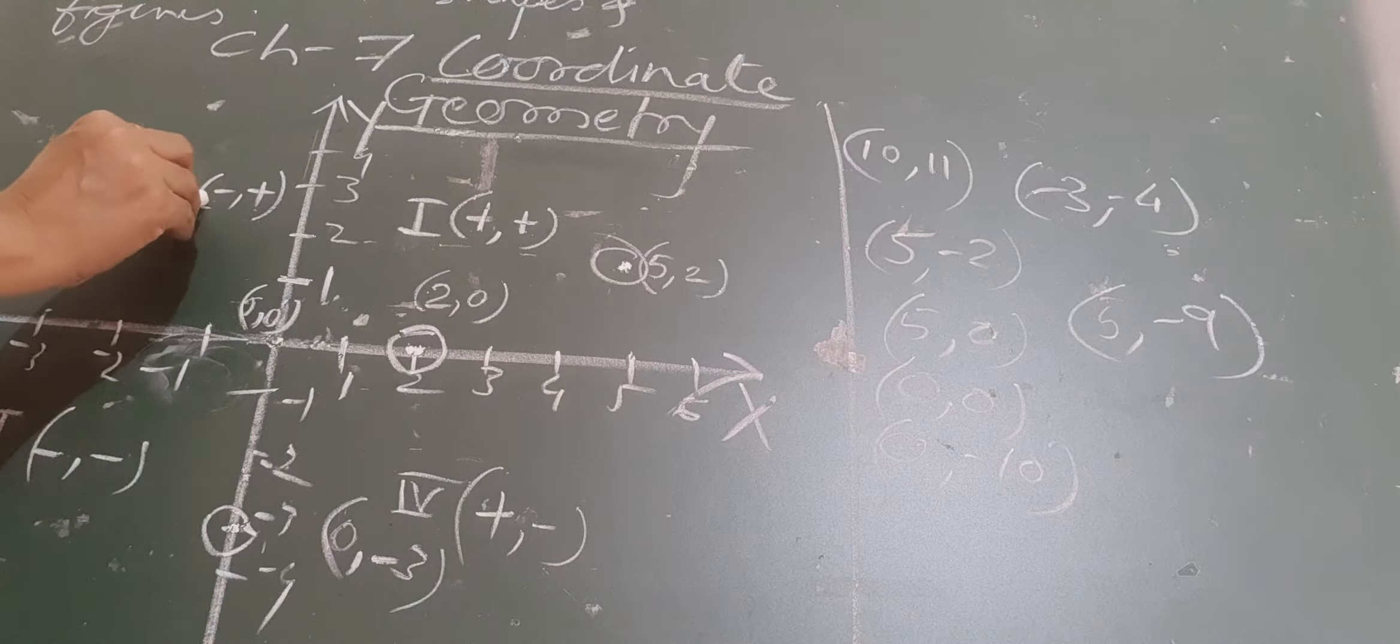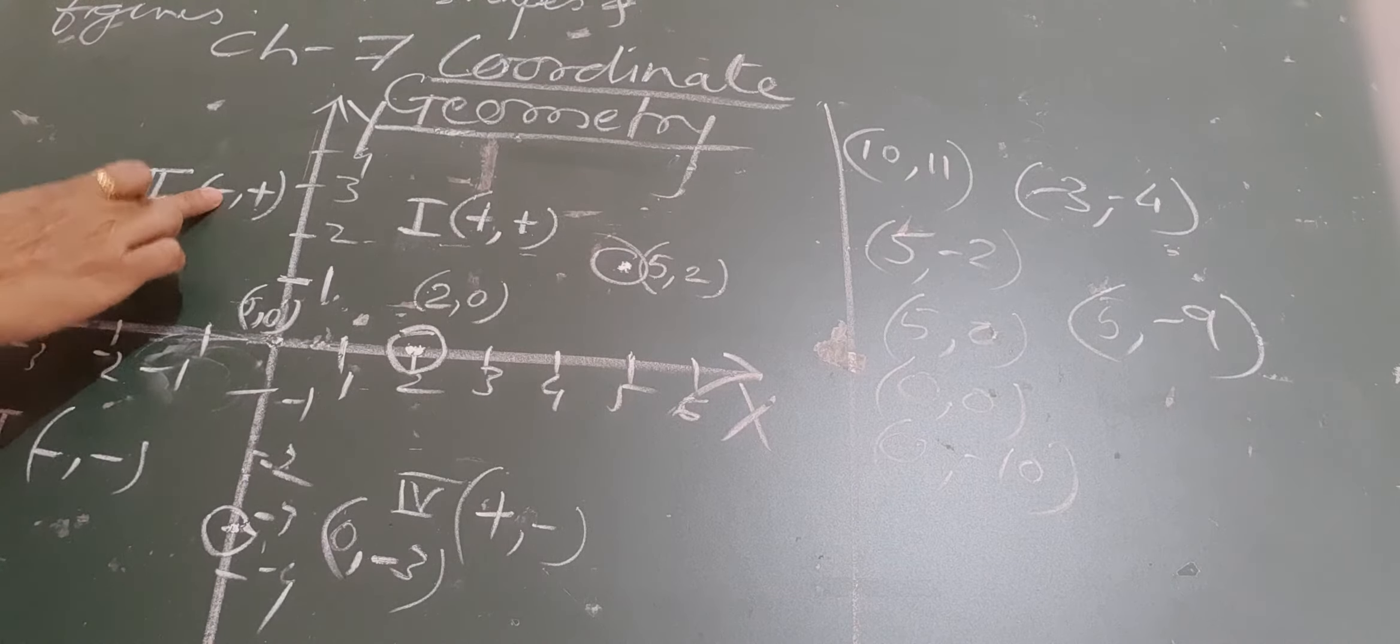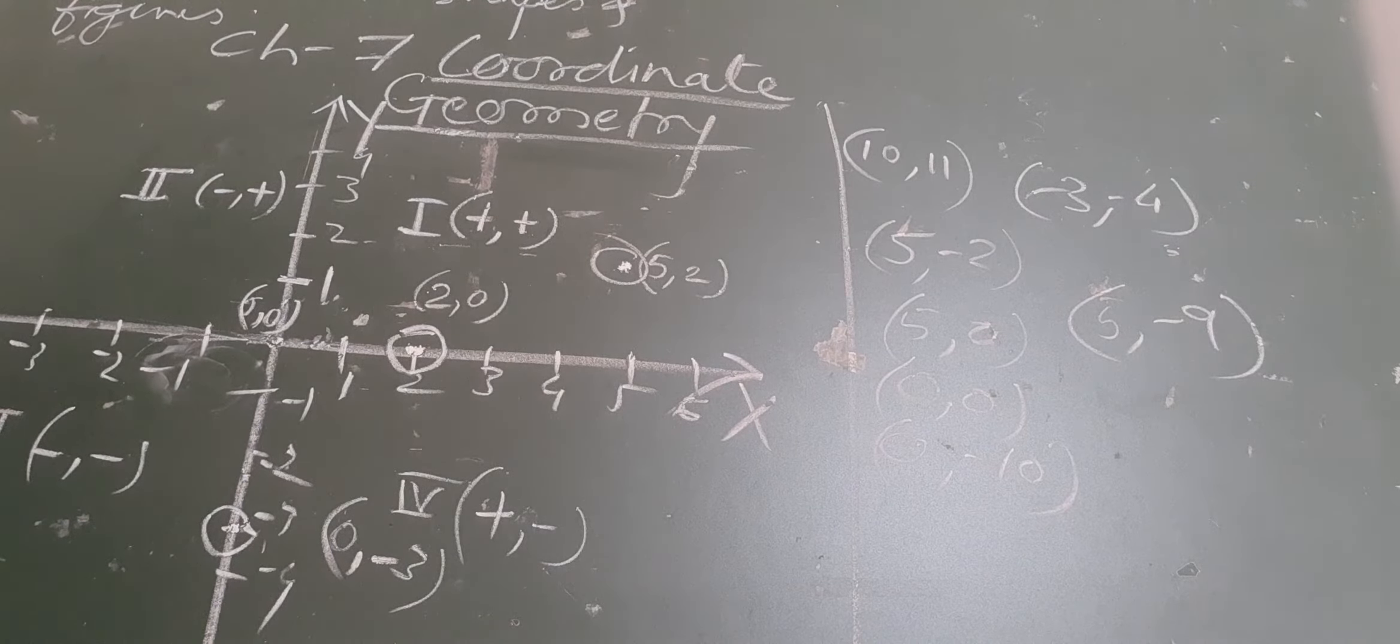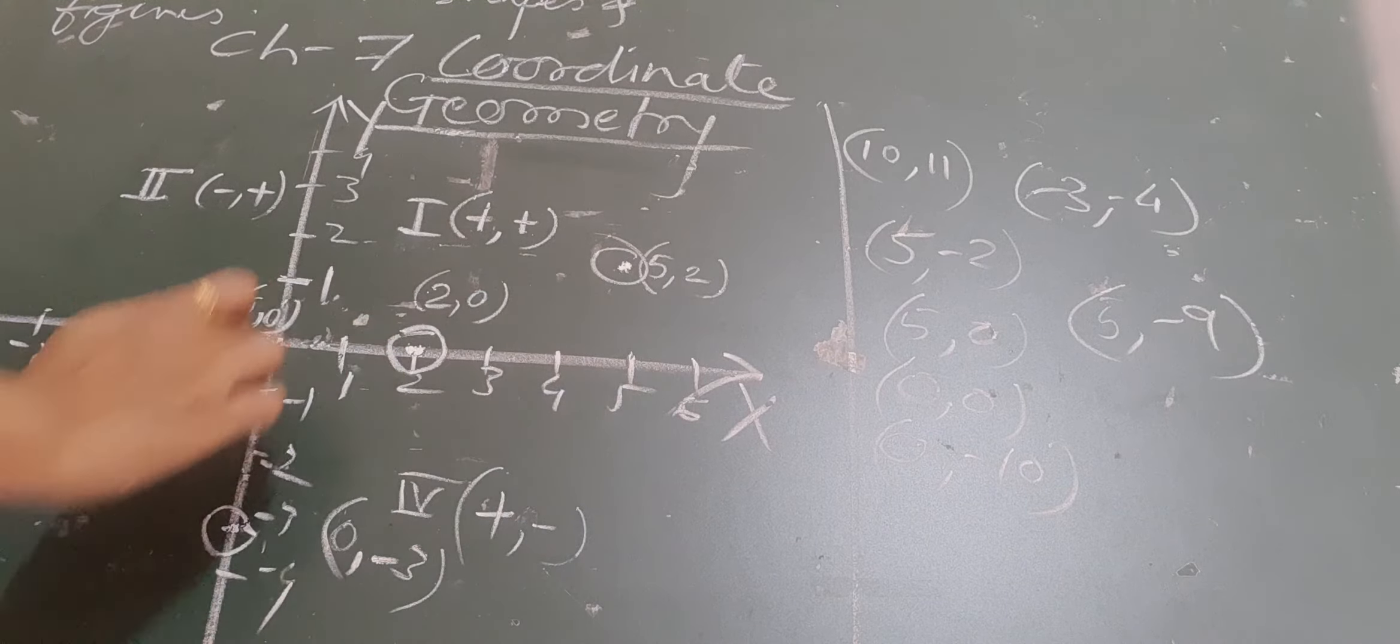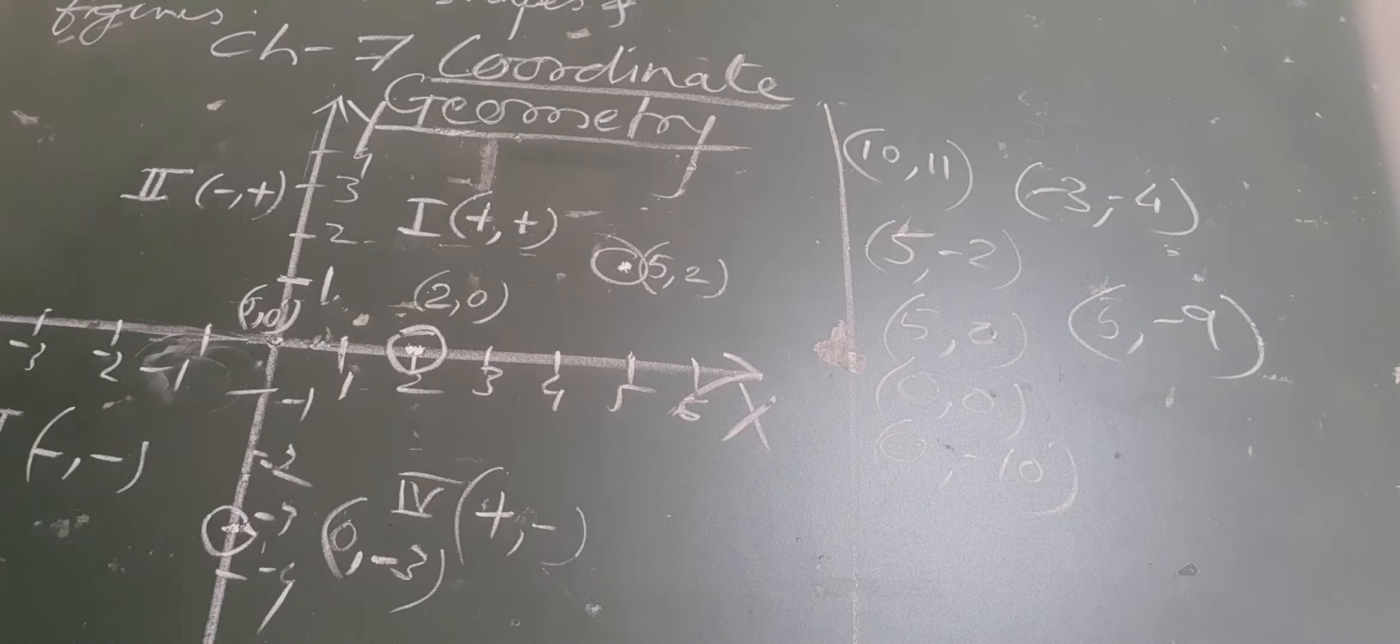So points in this quadrant are represented as negative, positive. In the third quadrant, negative, negative. In the fourth quadrant, positive, negative, as you can see here.